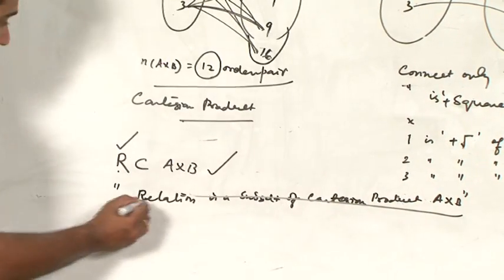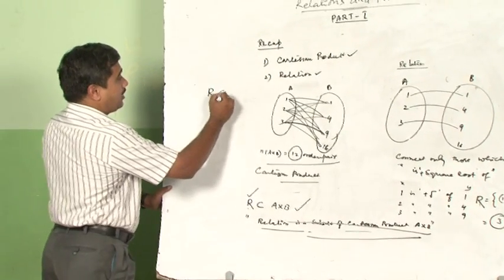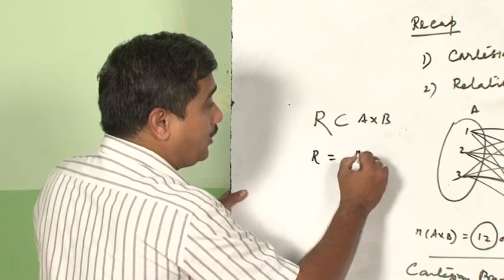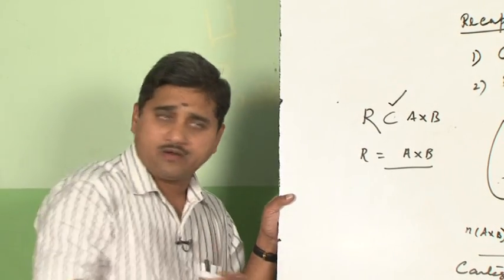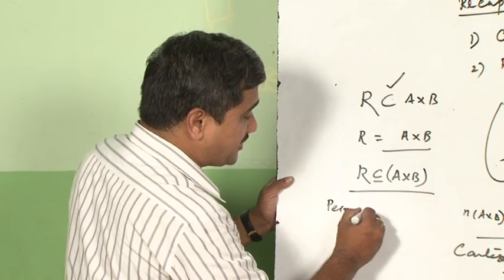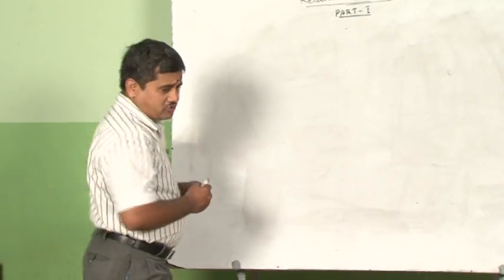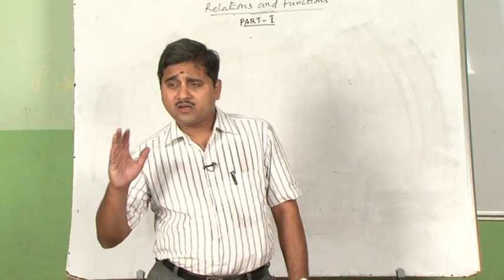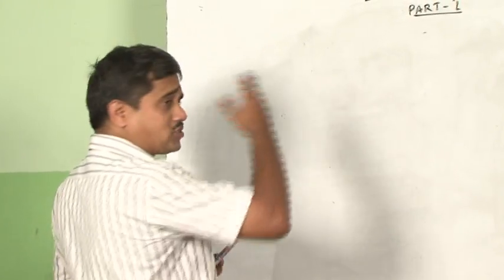You may ask: can R also be equal to A×B? Yes, it can. That is why instead of writing only 'R is a subset of A×B,' we write R ⊆ A×B, meaning R is a subset of or equal to A×B. This is the permanent notation we use to connect a relation to the Cartesian product. We have now understood how a relation is defined and how it is a subset of A×B.